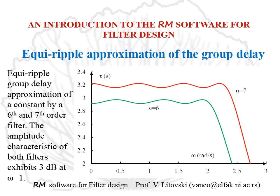Here are two examples of equiripple approximation of constant group delay — one is the sixth-order and the other is the seventh-order filter. The amplitude characteristic of both filters was normalized so that the amplitude attenuation exhibits three decibels at omega equals unity. We can see that even in the sixth-order filter, the approximation interval of the group delay is twice as broad as the passband of the filter.